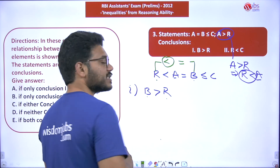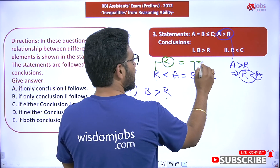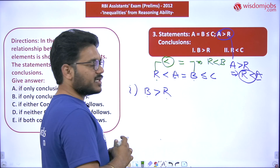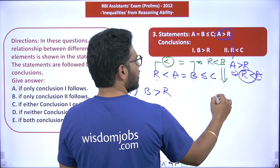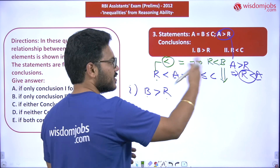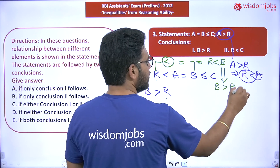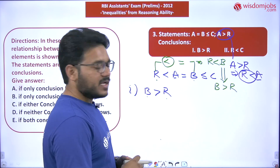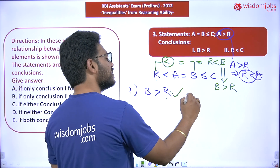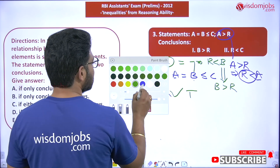Priority must be given to the 'less than' symbol. Based on this, R must be less than B, i.e., R < B. Reading this the other way, B > R — which matches Conclusion 1 exactly. So Conclusion 1 is true.